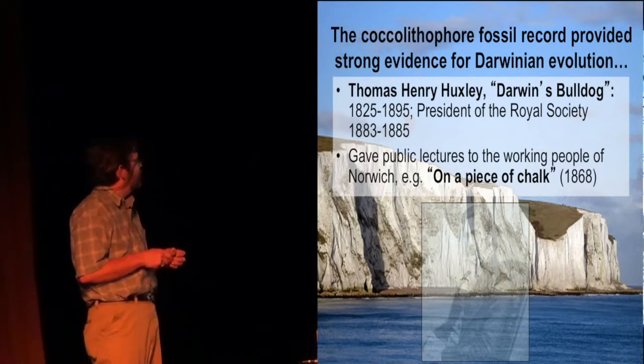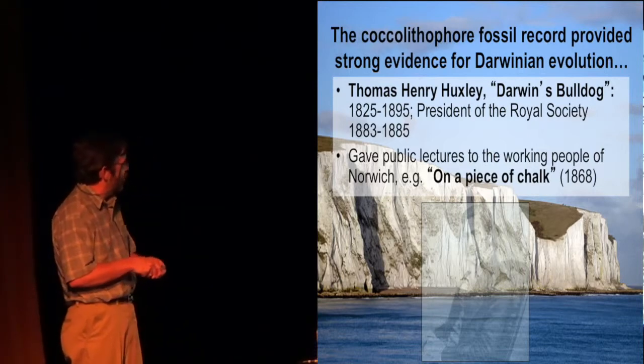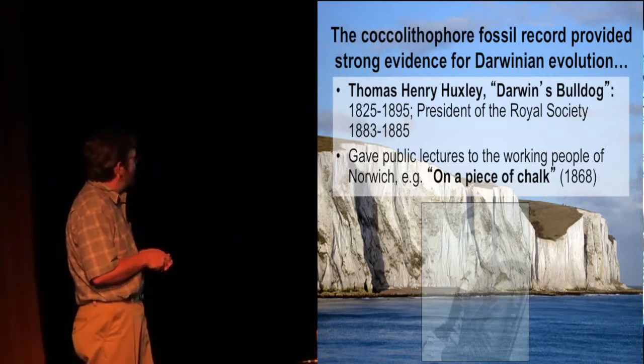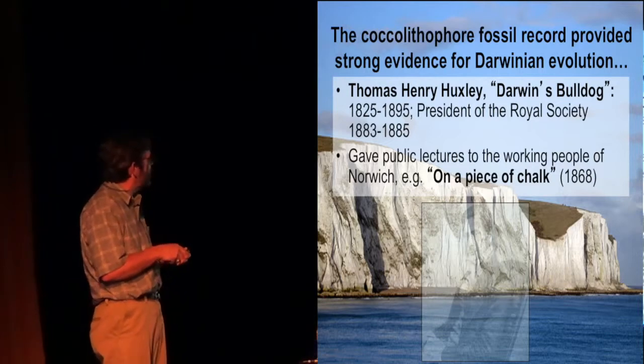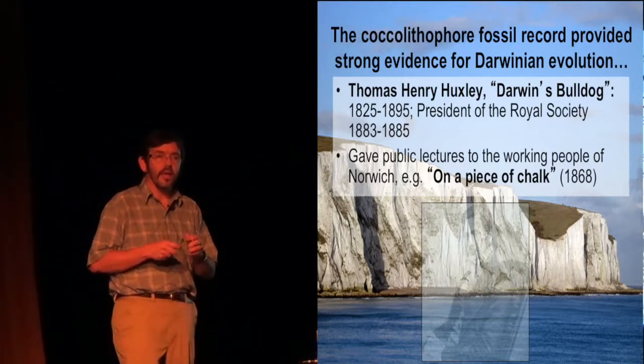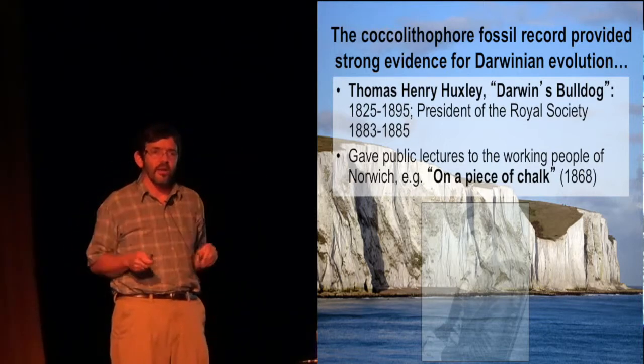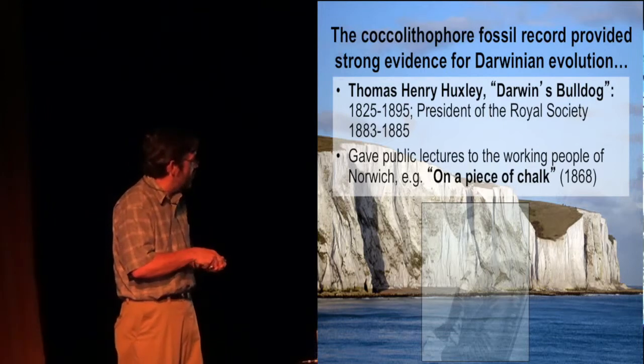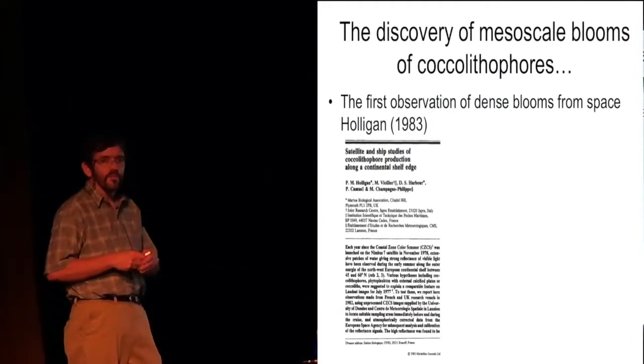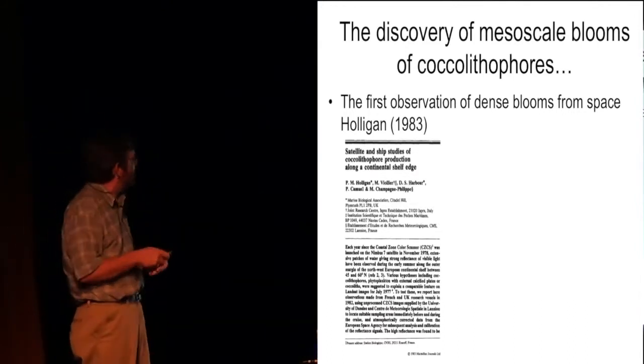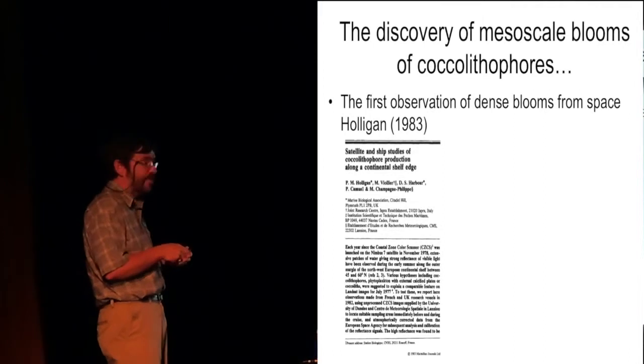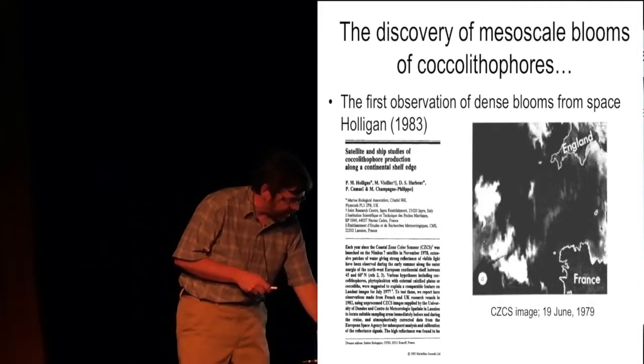And just to take you back to a little bit of evolution here. The White Cliffs of Dover, which is in the background, is all made up of foraminifera ooze and coccoliths. Nothing but these tiny calcium carbonate plates. And Thomas Huxley, who was known as Darwin's bulldog, was president of the Royal Society. He gave public lectures kind of like this. One was called On a Piece of Chalk. And it was basically buttressing what Darwin was teaching everybody about evolution. Because all that history was trapped in the White Cliffs of Dover.